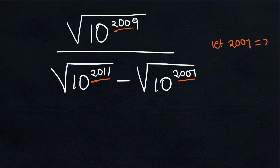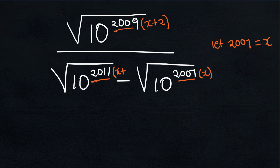So we are going to say: let 2007 equal x. In other words, 2007 is replaced by x. To get to 2009 we add 2 to 2007, so 2009 becomes x plus 2. Similarly, from 2007 to 2011 we add 4, so 2011 becomes x plus 4.